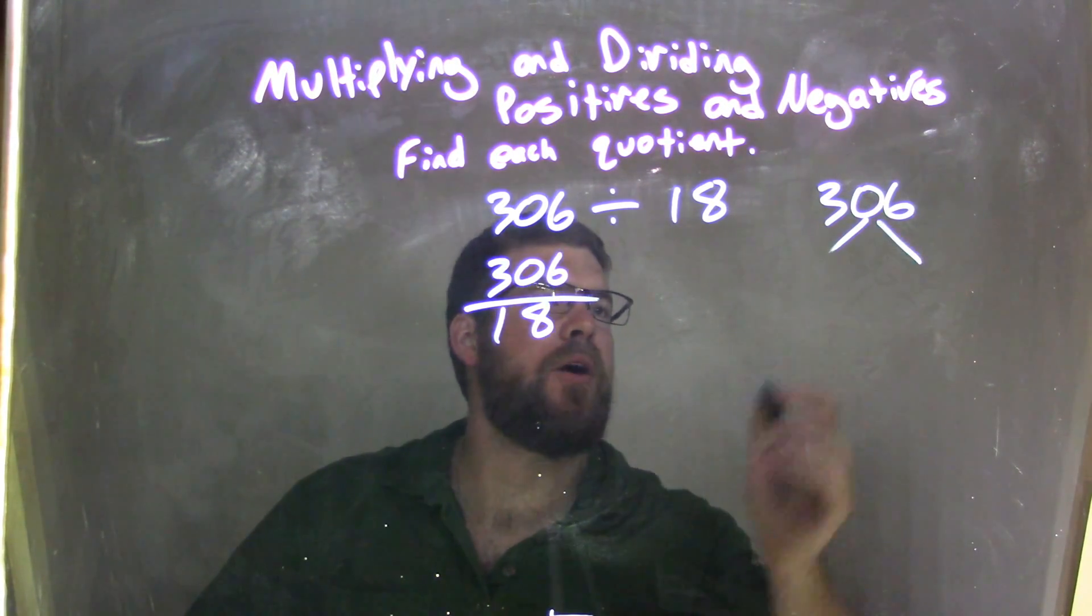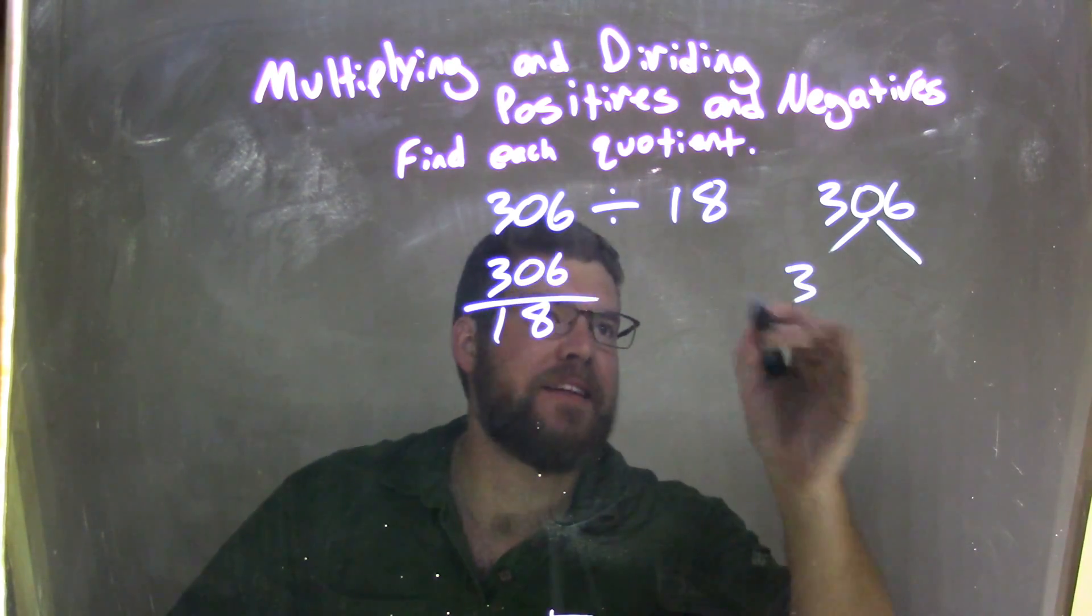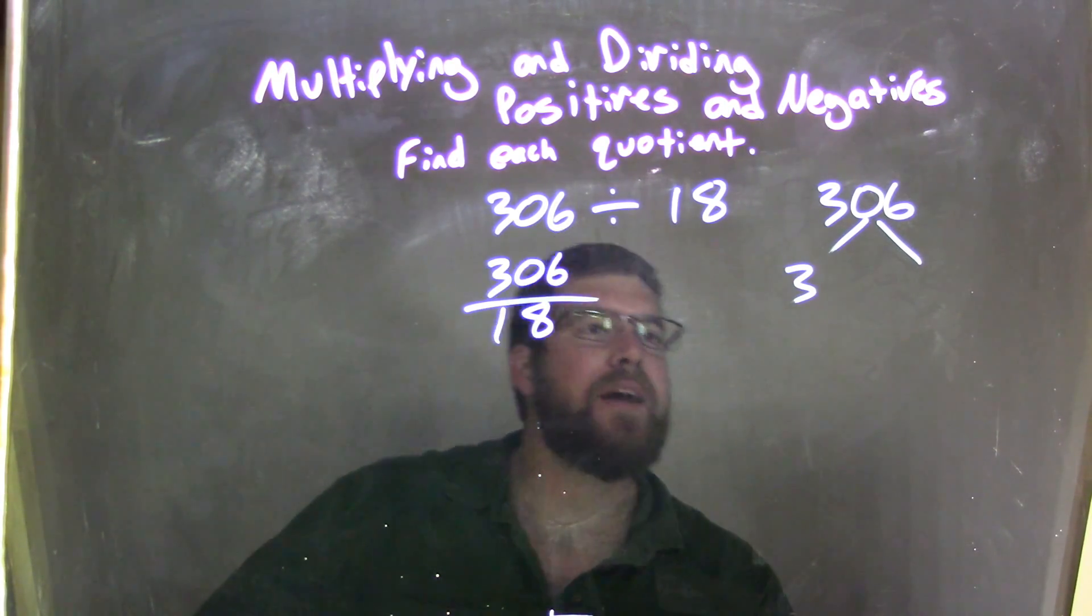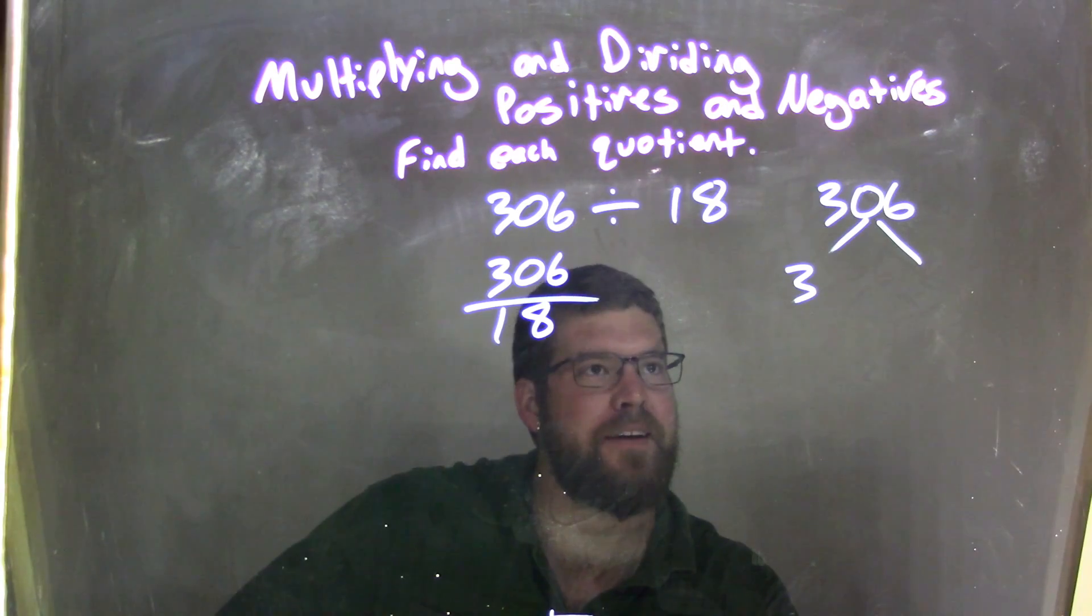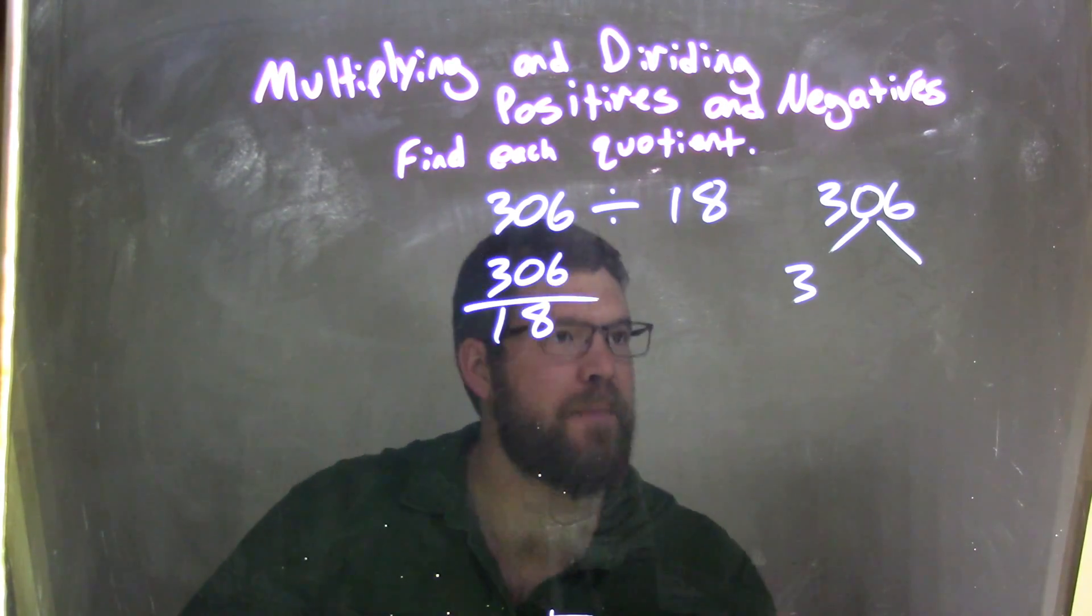Well, I know 3 at least goes into 306. 3 goes into 300 100 times, and 3 goes into 6 2 times, so 102. So, 3 times 102 is 306. We're good to go.